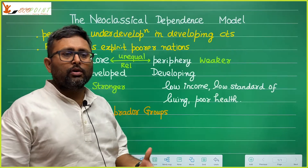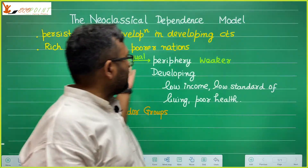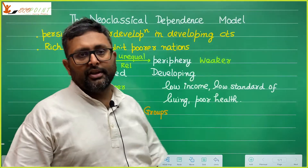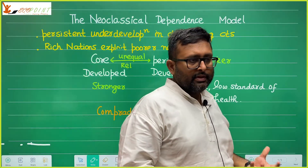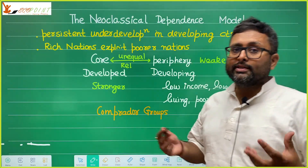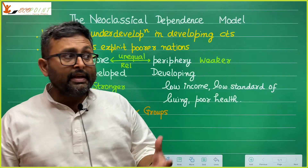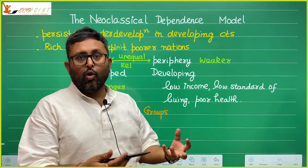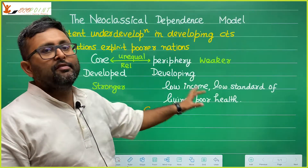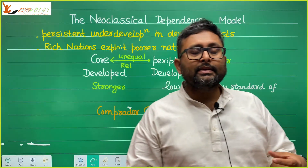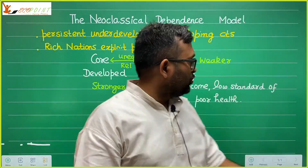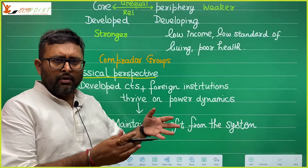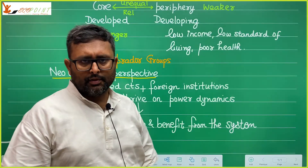These compredor groups are like middlemen or agents of core countries operating within the periphery countries. They thrive on these unequal relationships. The neoclassical perspective argues that developed nations and foreign institutions like the IMF and World Bank also thrive on this power dynamic between core and periphery countries, benefiting from the system of unequal relationships and not making real reform efforts to help developing countries.